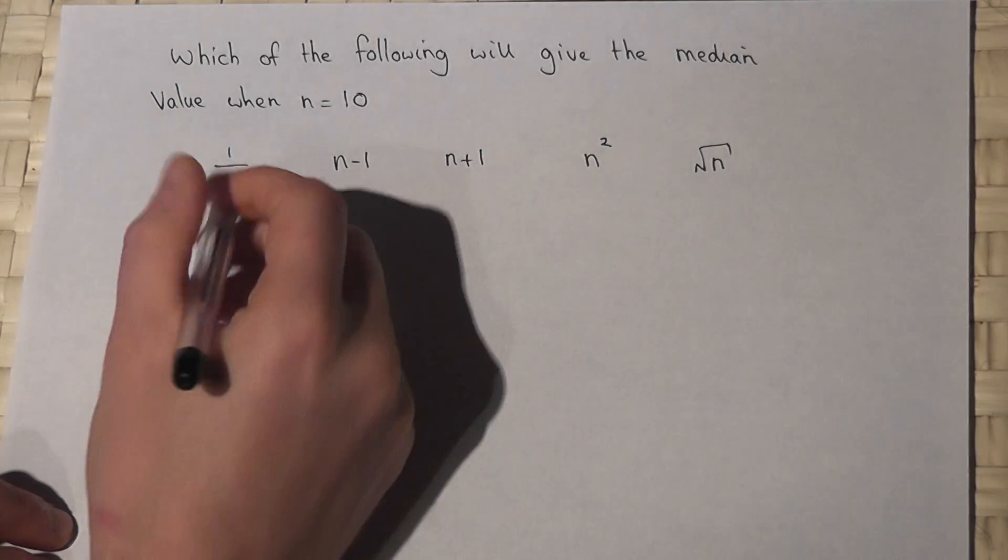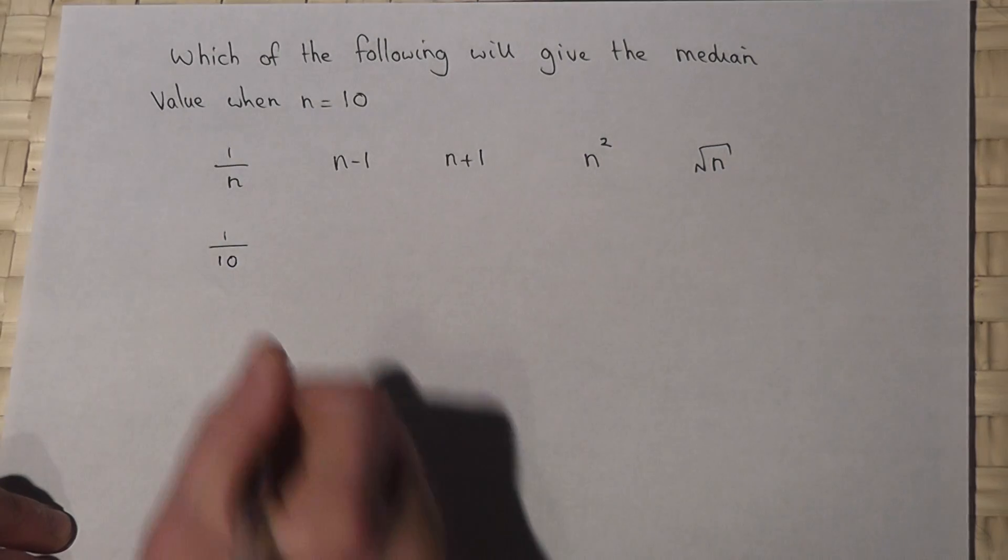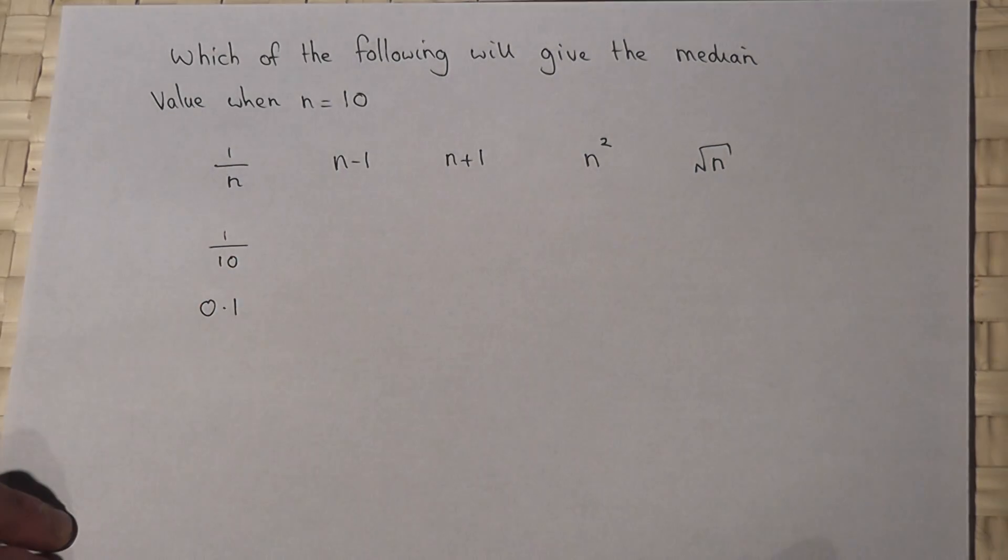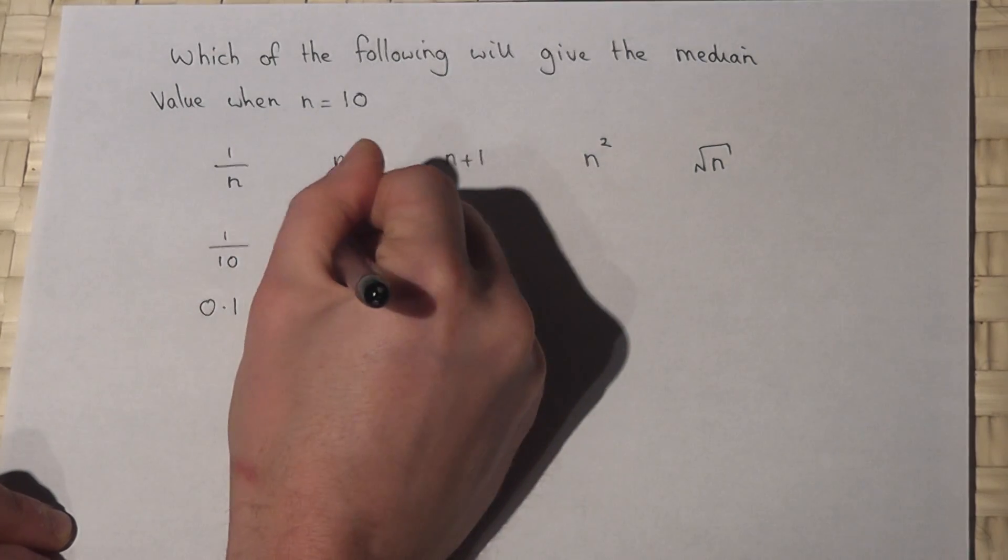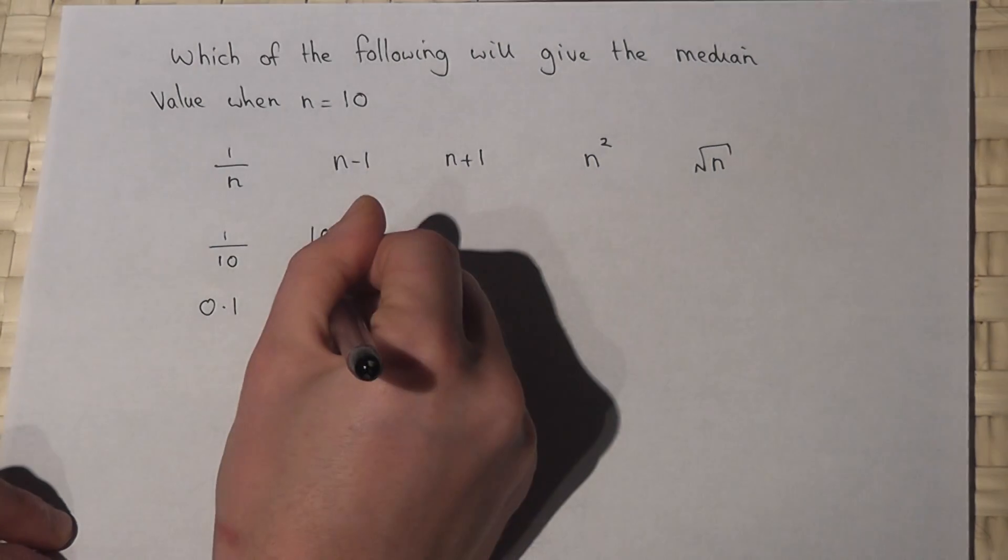So 1 divided by 10, well that's just 0.1 or a tenth. 10 take away 1, that just equals 9.